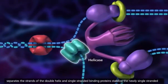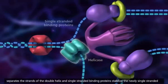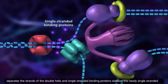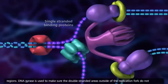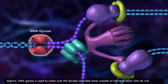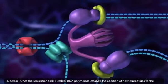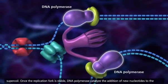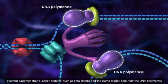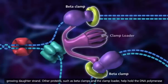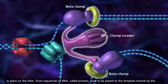Helicase separates the strands of the double helix, and single-stranded binding proteins stabilize the newly single-stranded regions. DNA gyrase is used to make sure the double-stranded areas outside of the replication fork do not supercoil. Once the replication fork is stable, DNA polymerase catalyzes the addition of new nucleotides to the growing daughter strand. Other proteins, such as beta-clamps and the clamp loader, help hold the DNA polymerase in place on the DNA.